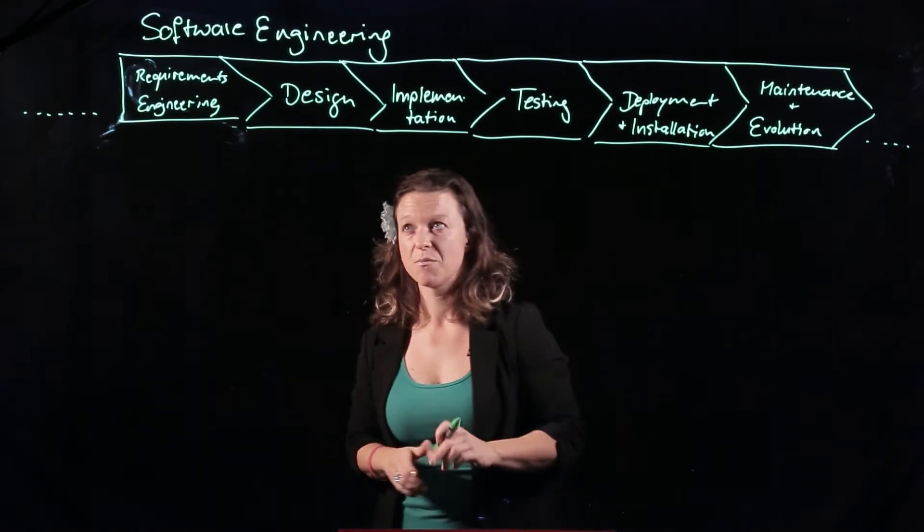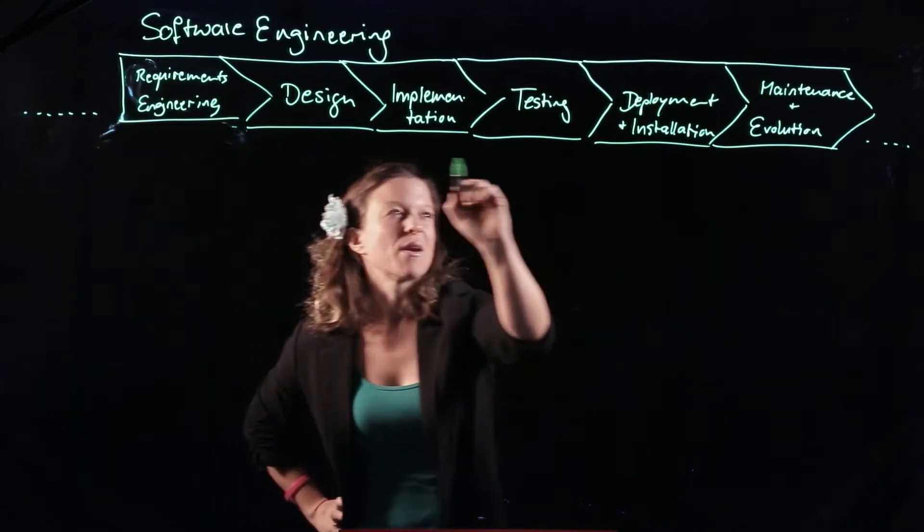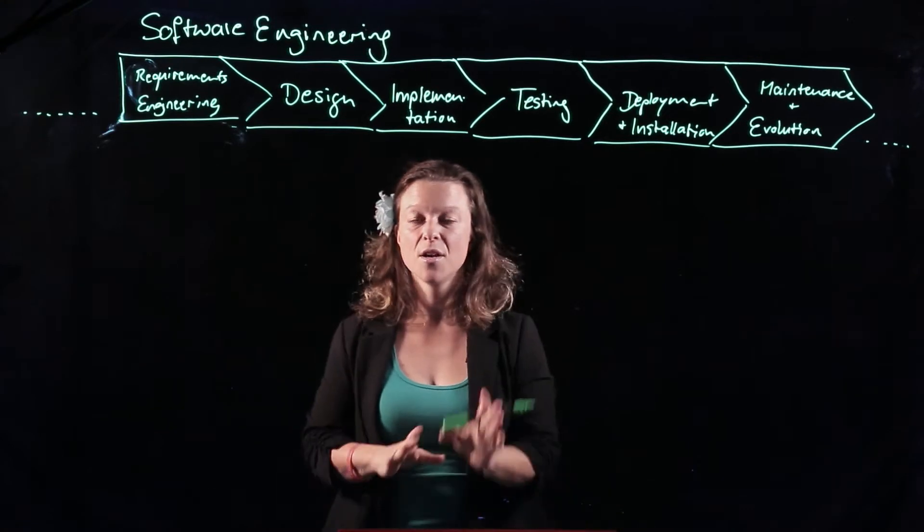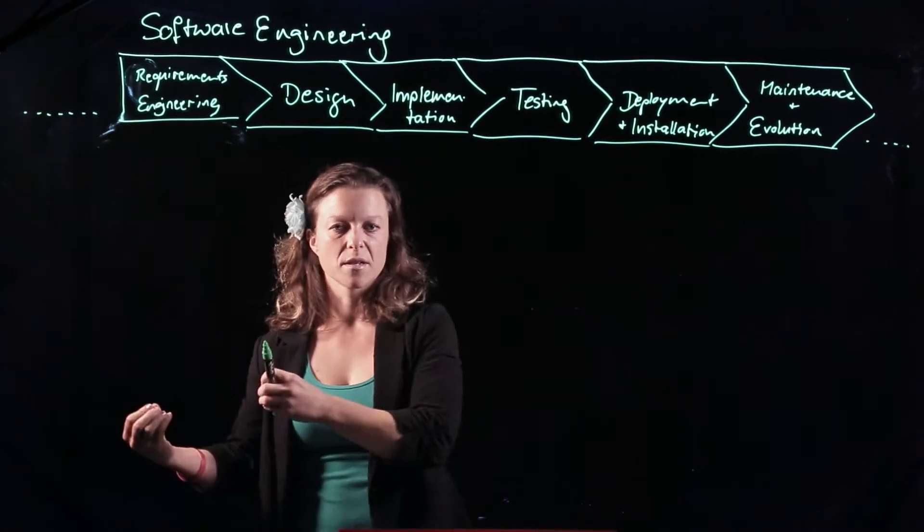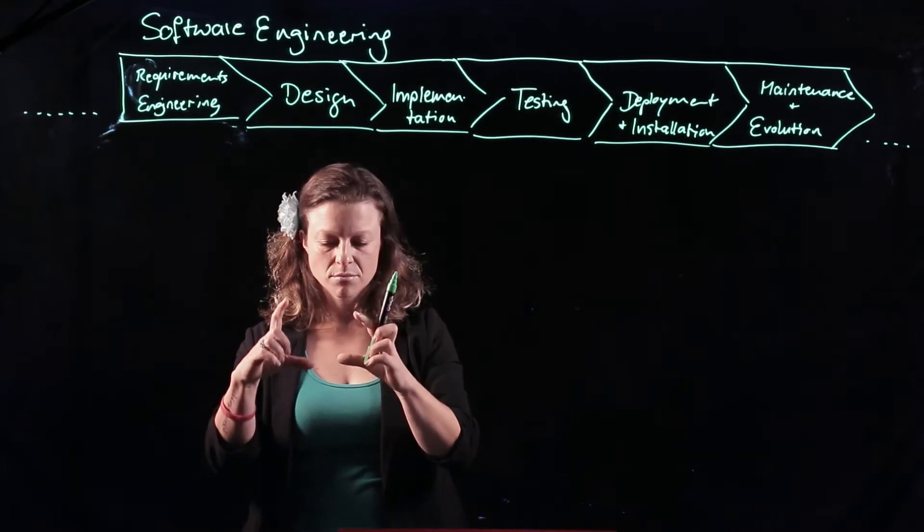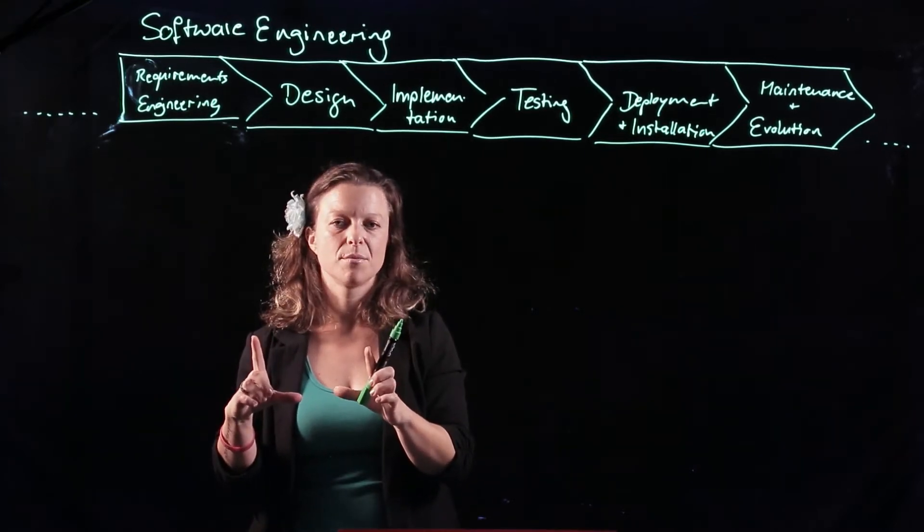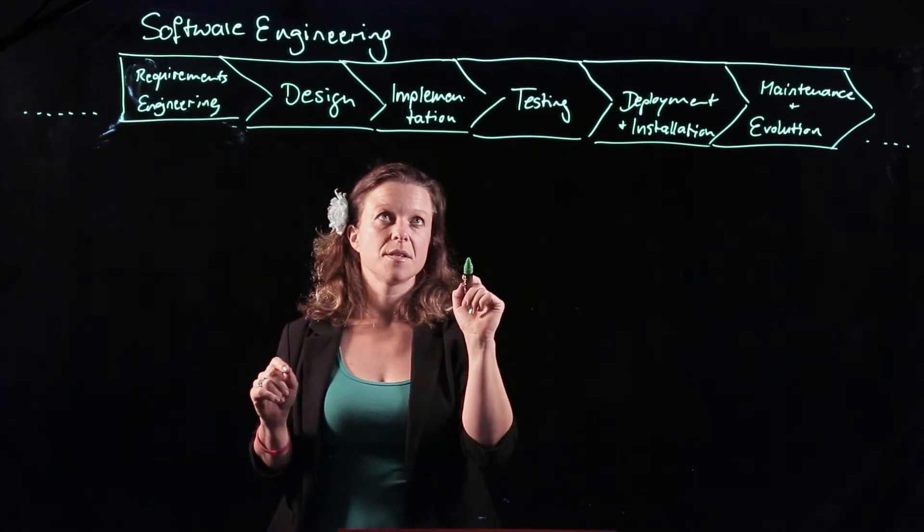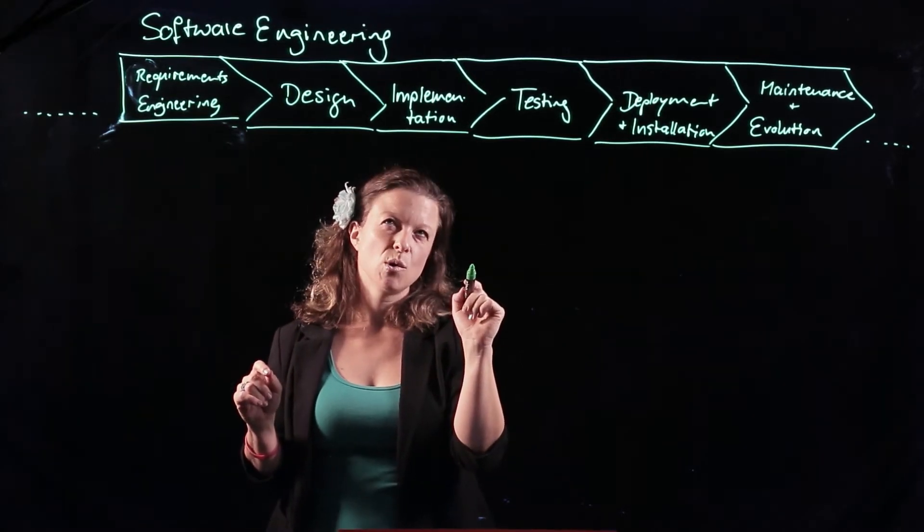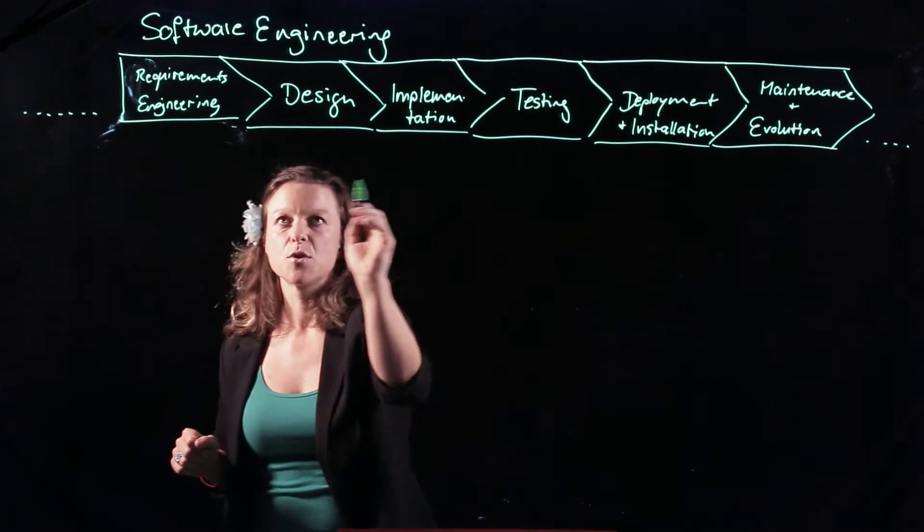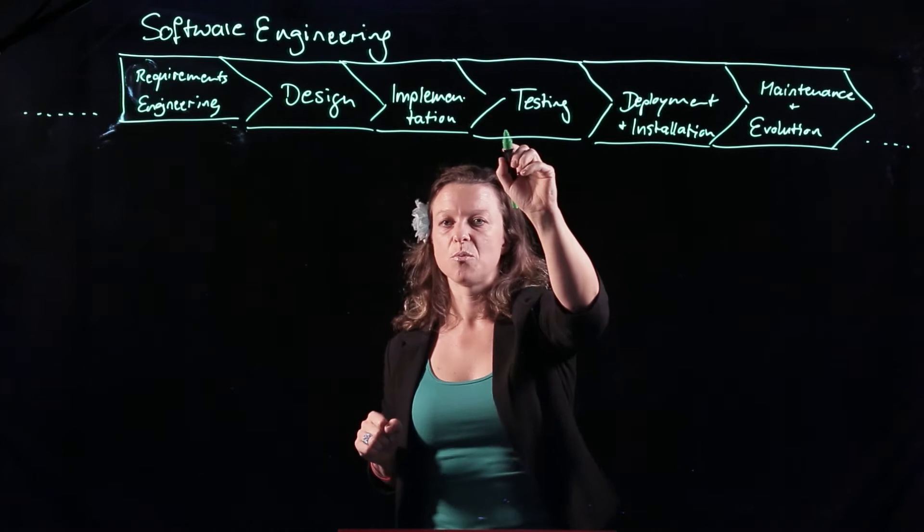That is one of the simplifications. The other one is this implies a linear process. Ain't happening. For those of you who already have a little experience, even just in developing a small app, you know that you start somewhere here, you get to a design, you start implementing and then you're like, oh, this didn't quite work as I thought it would. Okay, so you have to go back and fix the design and then you implement again.